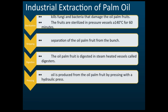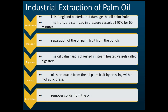For the industrial extraction of palm oil, this topic is not very important, so you just need to memorize the names of the processes in order: Sterilization → Stripping → Digestion → Pressing → Purification. Usually exam questions will ask you to arrange these processes in the correct order.